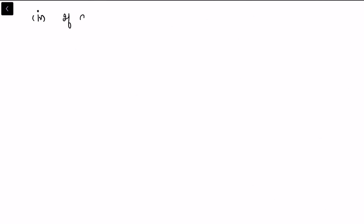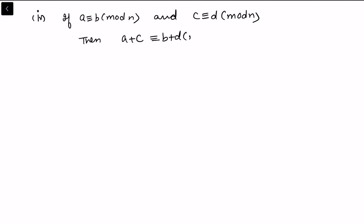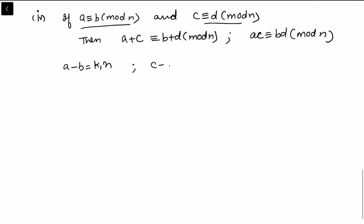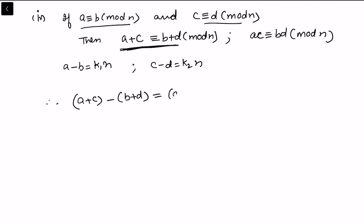Now we prove property four: if a is congruent to b modulo n and c is congruent to d modulo n, then a plus c is congruent to b plus d modulo n. From the given conditions, a minus b equals k1·n and c minus d equals k2·n. Then (a plus c) minus (b plus d) equals (a minus b) plus (c minus d) equals k1·n plus k2·n equals (k1 plus k2)·n. So a plus c is congruent to b plus d modulo n.